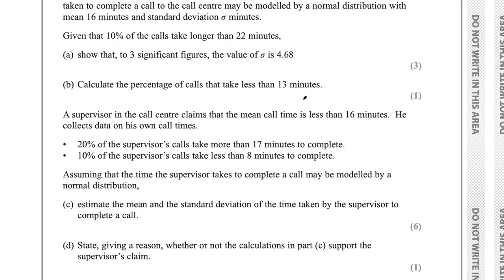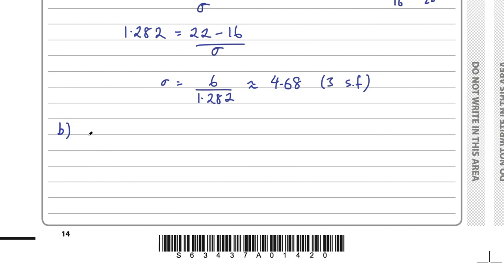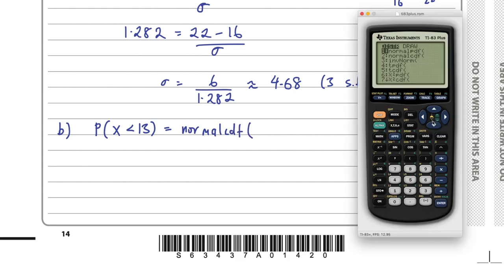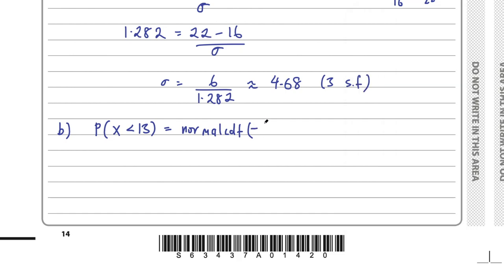Part B says calculate the percentage of calls that take less than 13 minutes. Now that I have the standard deviation, I can work that out. I'm looking for P(X < 13) using normal CDF on the calculator. Syntax: minimum is negative 9000, maximum is 13, mean is 16, standard deviation is 4.68. I get an answer of 0.2607, so approximately 26.1%.